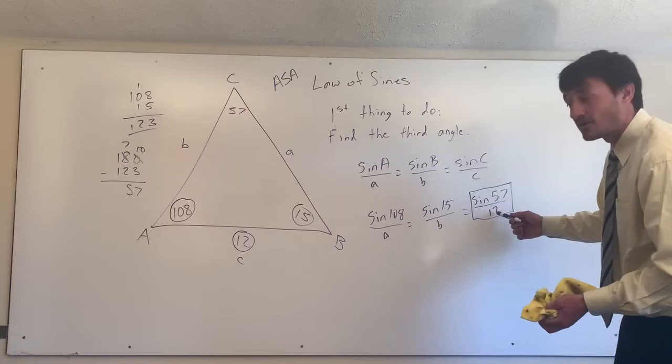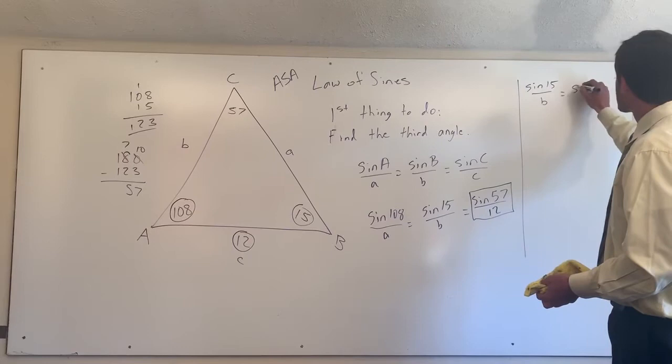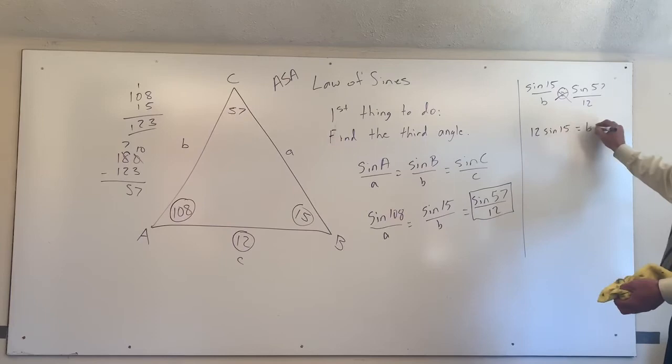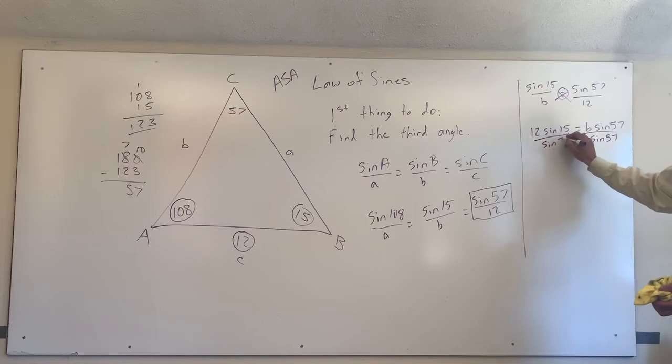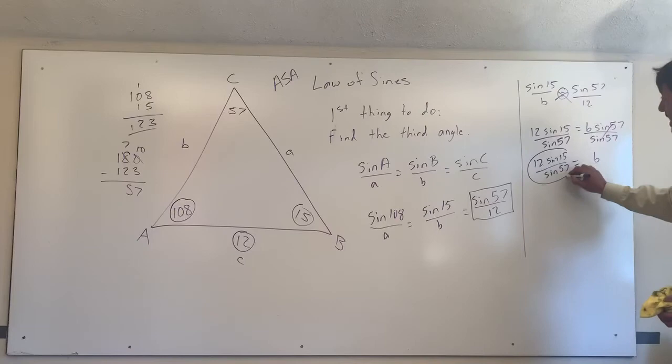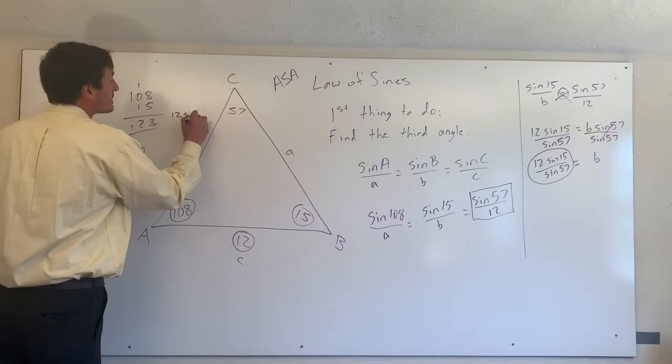So we're going to set this equal to the sine of 15 over b. So we're going to write the sine of 15 over b is equal to the sine of 57 over 12. Again, we cross multiply when there's equality between fractions, so we end up with 12 times the sine of 15 degrees is equal to b times the sine of 57. And we are interested in getting b by itself, so we have to divide by the sine of 57. And we end up with b is equal to 12 times the sine of 15 over the sine of 57. And you guys can plug this into a calculator as long as your calculator is in degree mode and find the actual approximated value for b. So we know that b is 12 times the sine of 15 over the sine of 57.